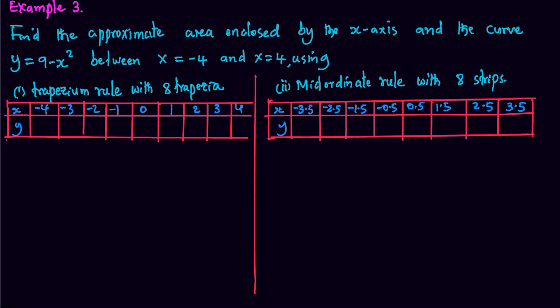So we start with the first method, trapezium rule with 8 trapeziums. We need to find the length of the ordinates which corresponds to the values of x, the values of y in the table. So we substitute for x to get the value of y.